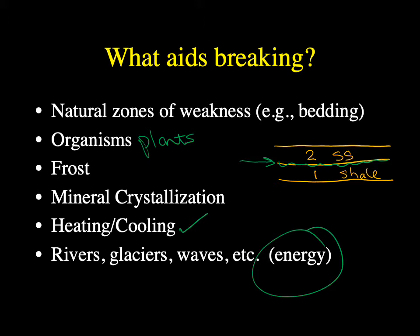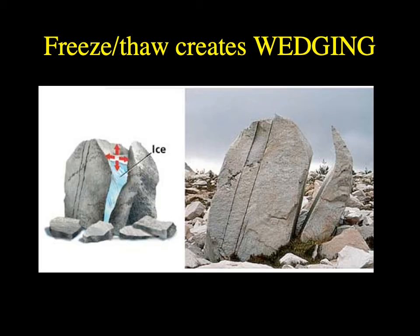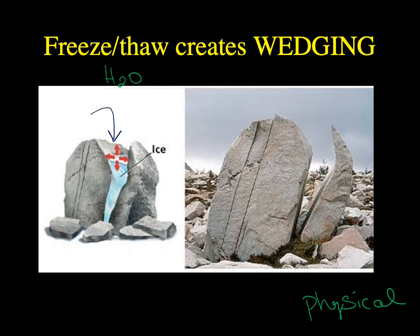Here's a good example of physical weathering. We're going to use water, but not through a chemical reaction — just physically. Water gets into a crack during warm weather, and when temperatures get colder the water freezes. When water freezes and turns to ice, it expands, pushing out in all directions, and it breaks the rock open in a process called wedging.